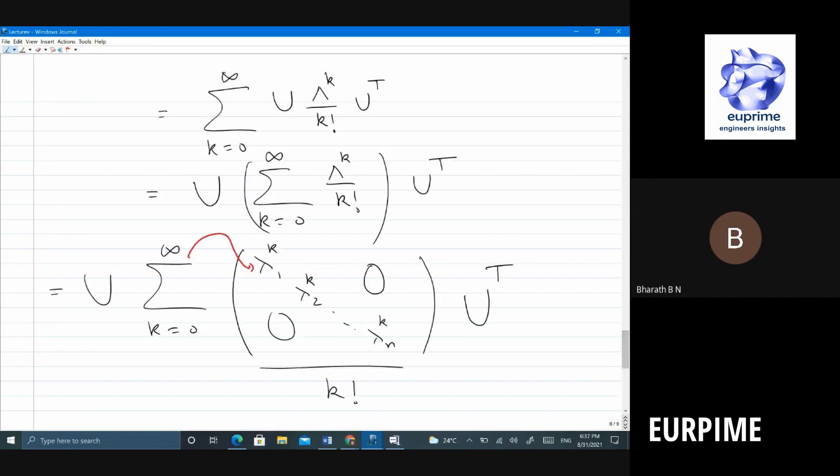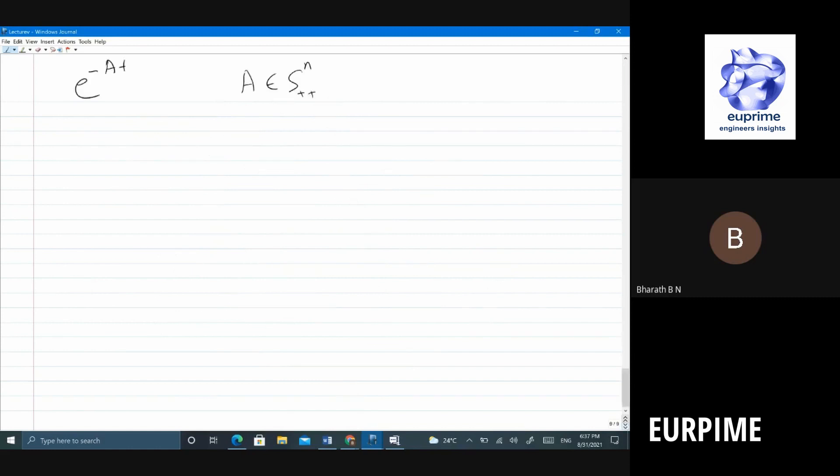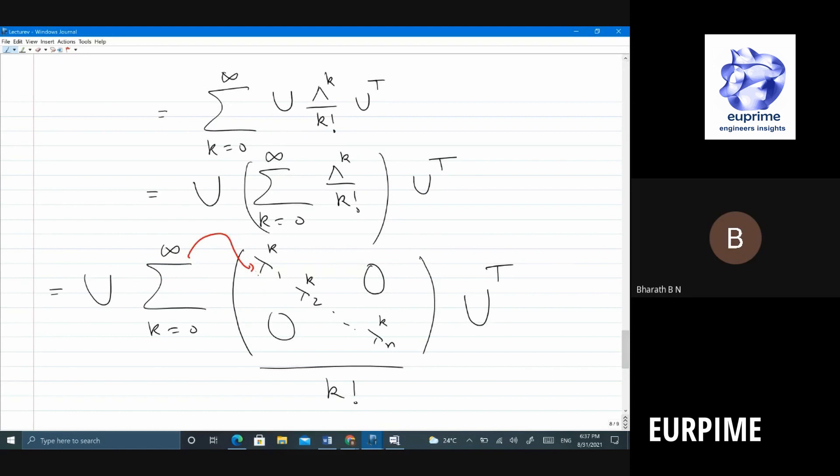So you should apply this now. You will have, instead of lambda 1 power k, you have lambda 1 t whole power k. Right? So the diagonal, what do you have? So, okay. So I think you have minus, right? You will have minus lambda 1. It will be e power minus lambda 1 power k, t power k.